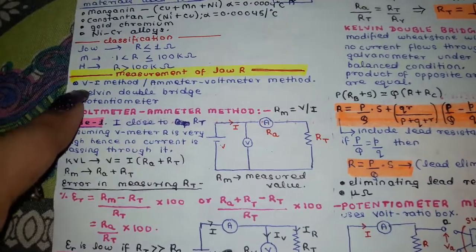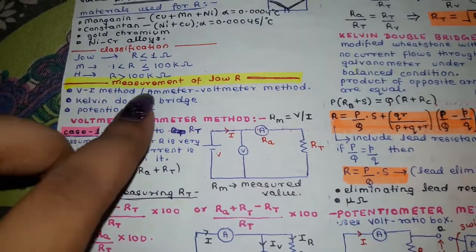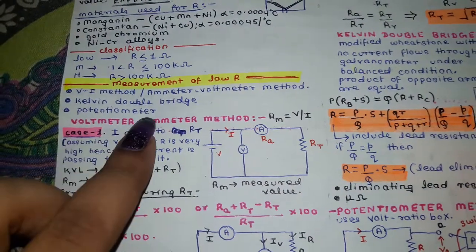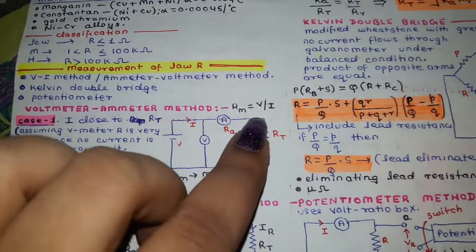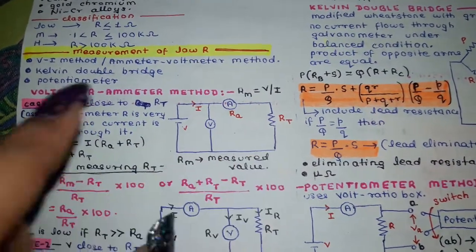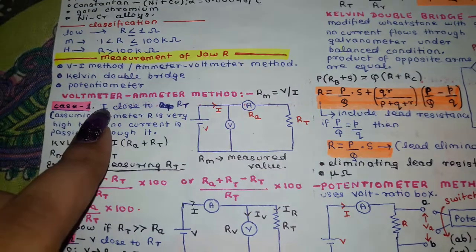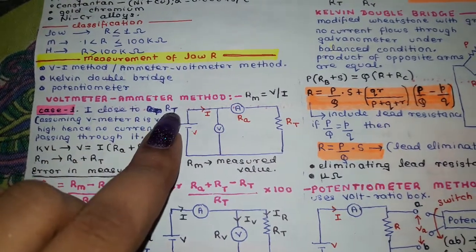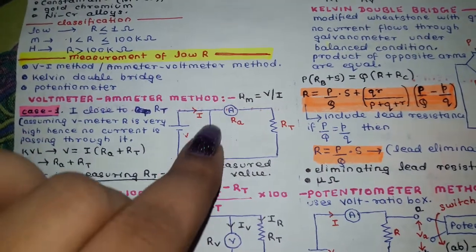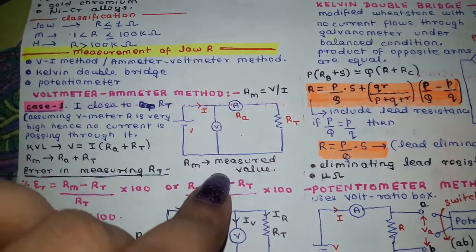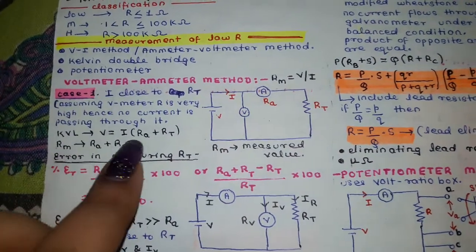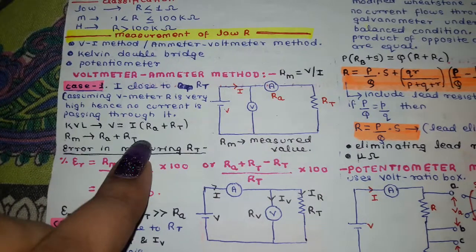For measuring low resistance (≤1 ohm), we have three methods: the volt-ampere (ammeter-voltmeter) method, the Kelvin double bridge, and the potentiometer method. In the voltmeter-ammeter method, when the ammeter is placed close to the unknown resistance, we assume no current flows through the voltmeter branch. The KVL equation gives us the measured resistance value.